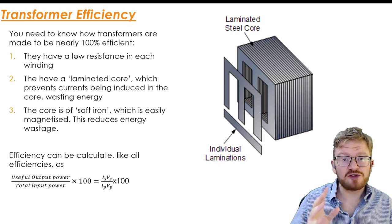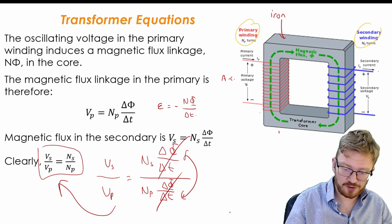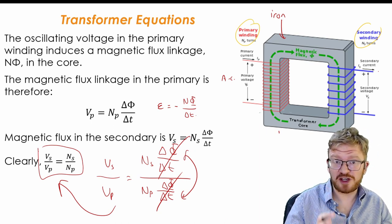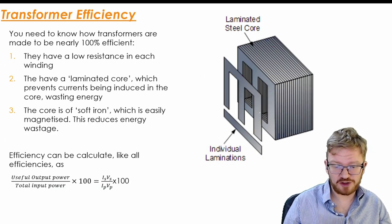Obviously this equation only works if I can say that these two flux linkages—sorry, magnetic fluxes—are the same. So how do I make the two fluxes the same? A couple of little things that you need to do.